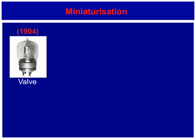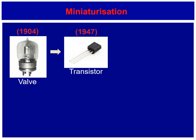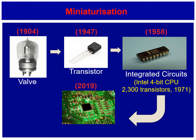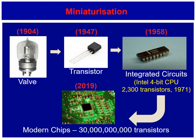The valve from 1904 was replaced by the transistor, which used semiconductors like silicon and had exactly the same effect as the valve but was only about the size of your thumbnail. These transistors were discrete until someone had the idea of etching all the different transistors onto the silicon, giving you an integrated circuit. In 1971, an Intel 4-bit CPU had 2,300 transistors. Fast forward to 2019, you could get 30 billion transistors onto a modern chip the size of your thumbnail — that's 30 billion valves on something the size of your thumbnail.